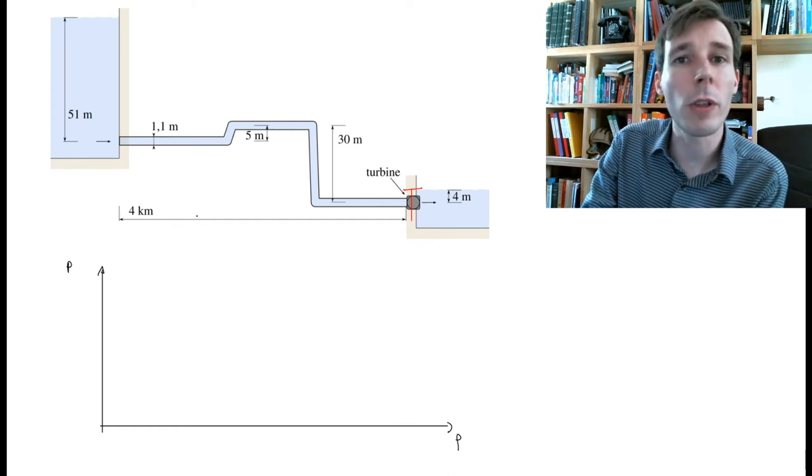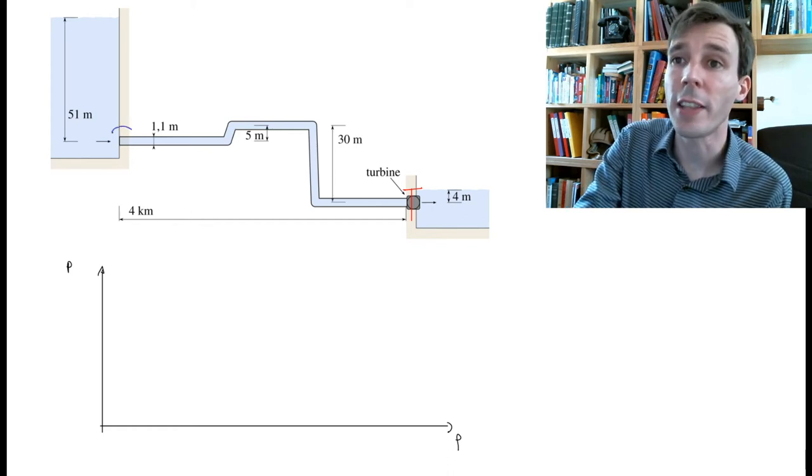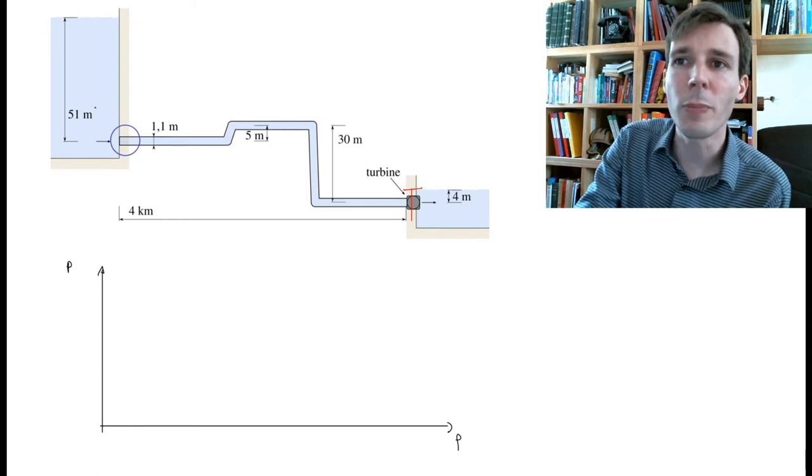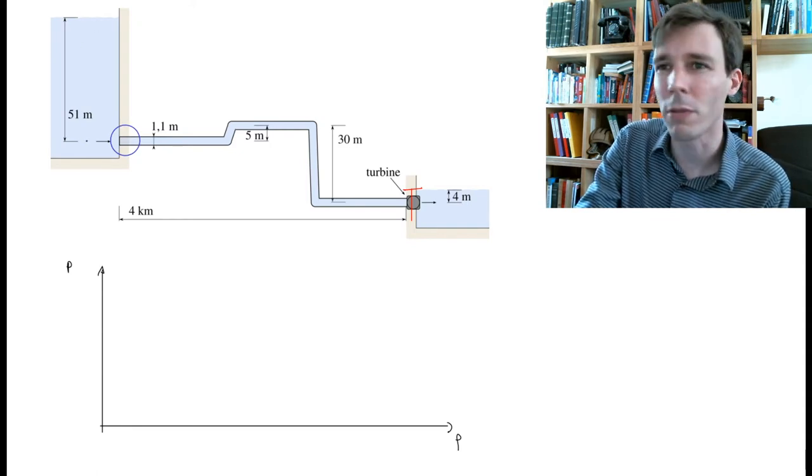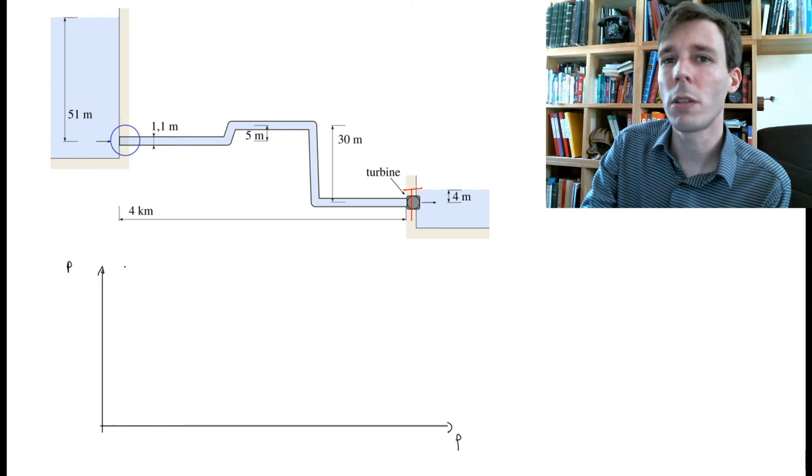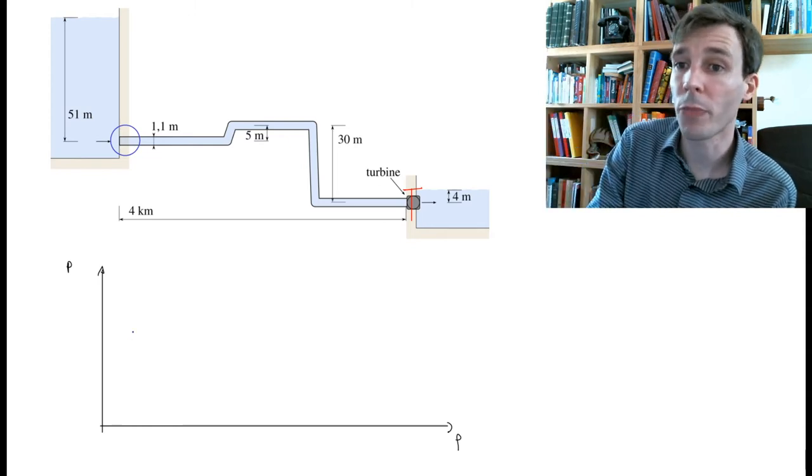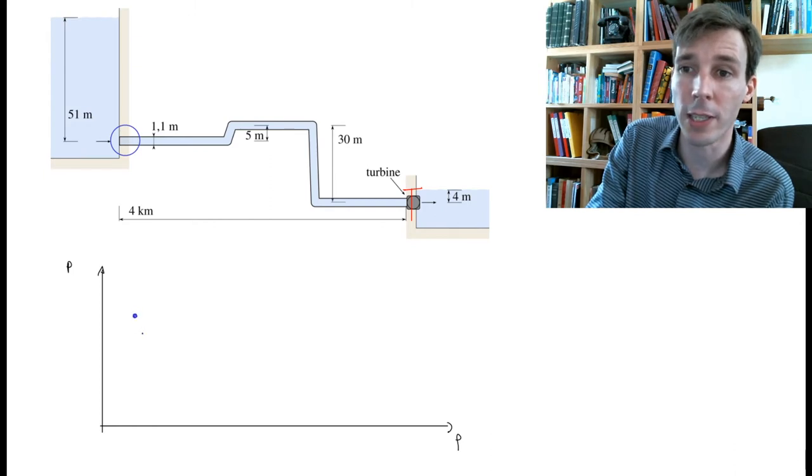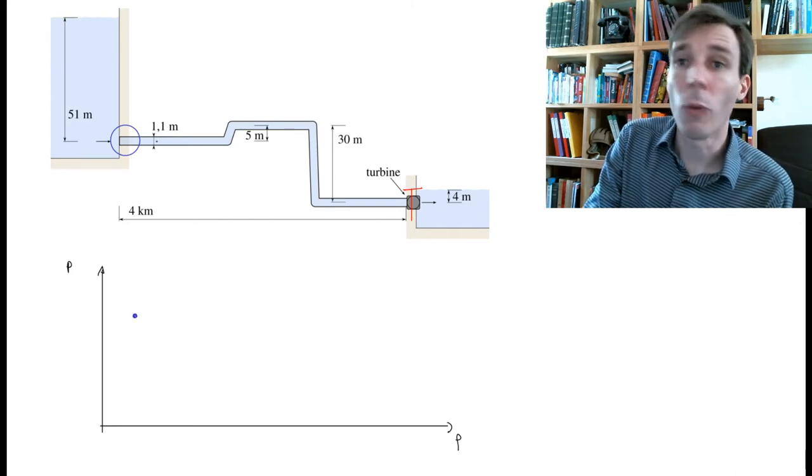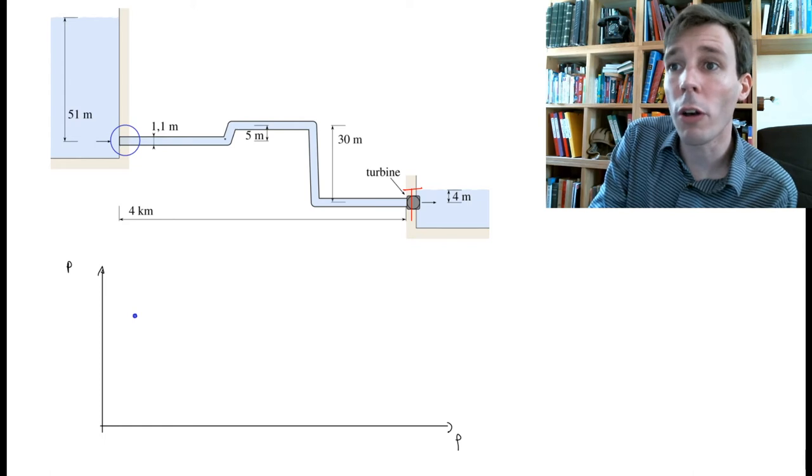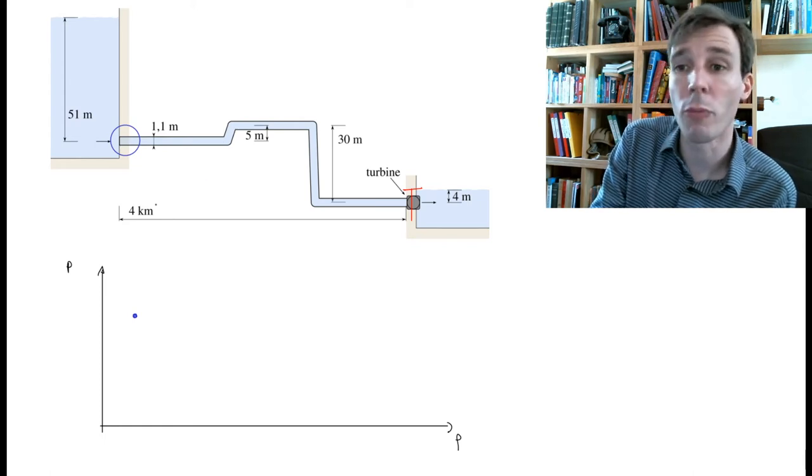Let's start with the hydrostatic case. We start at this point here, at the entrance of the pipe. At this point, we are already 51 meters below the surface of the water, so the pressure is five bars more than the atmospheric pressure. The pressure here in the pipe will be relatively high. The water is not flowing, so as we go along the pipe, we just swim horizontally and the pressure will not change.